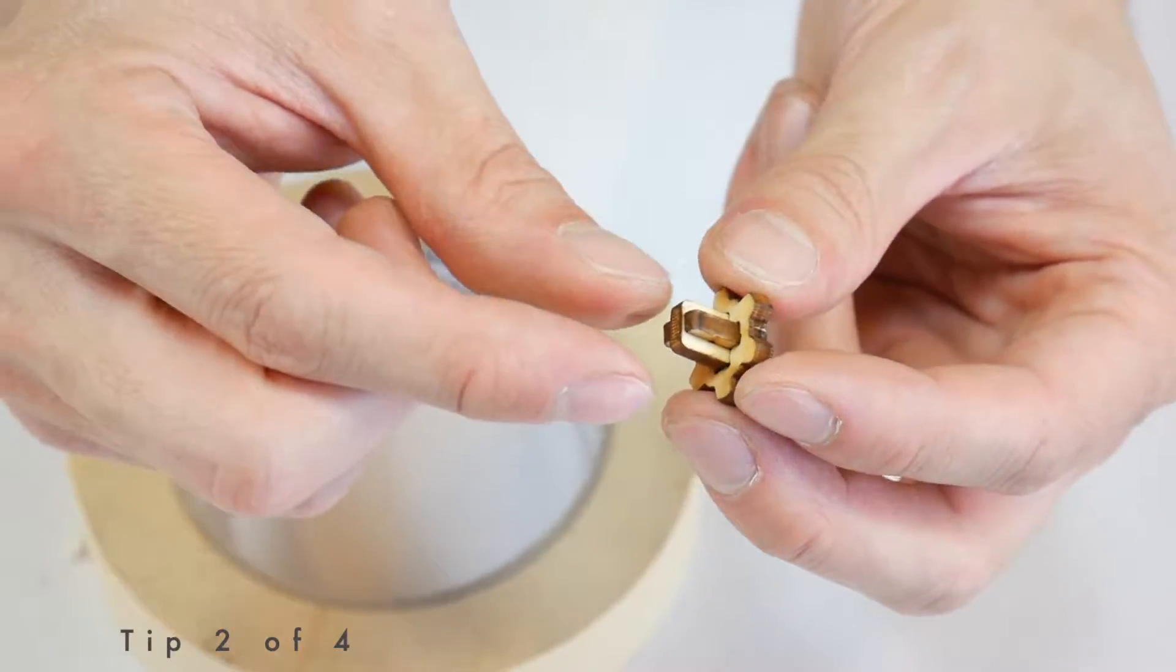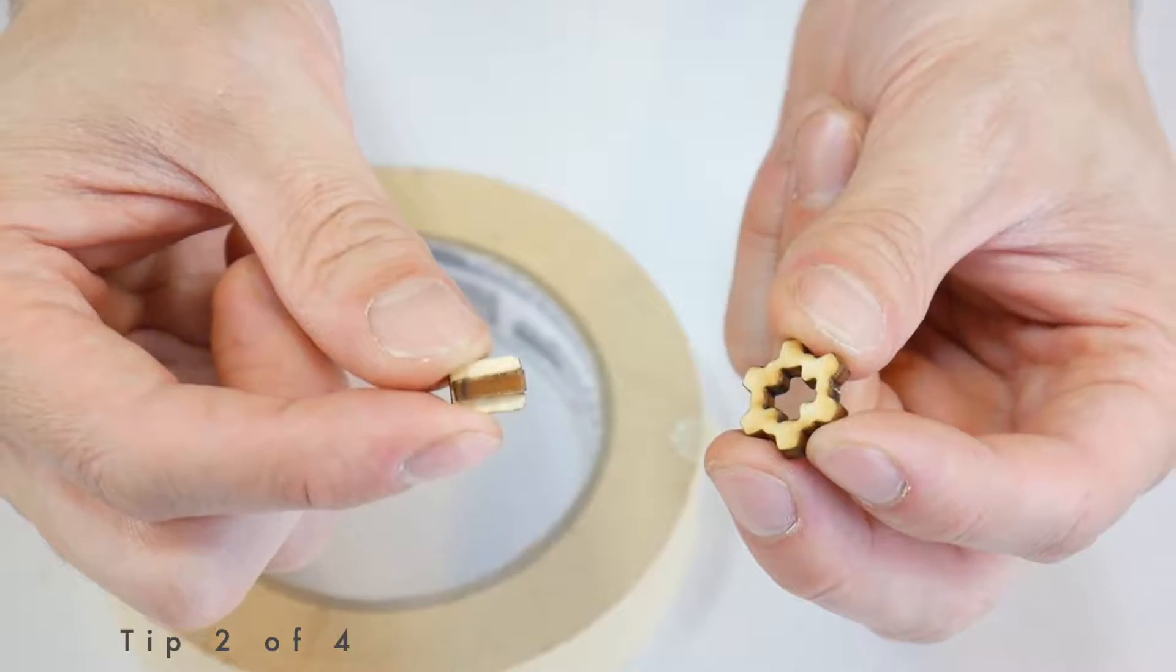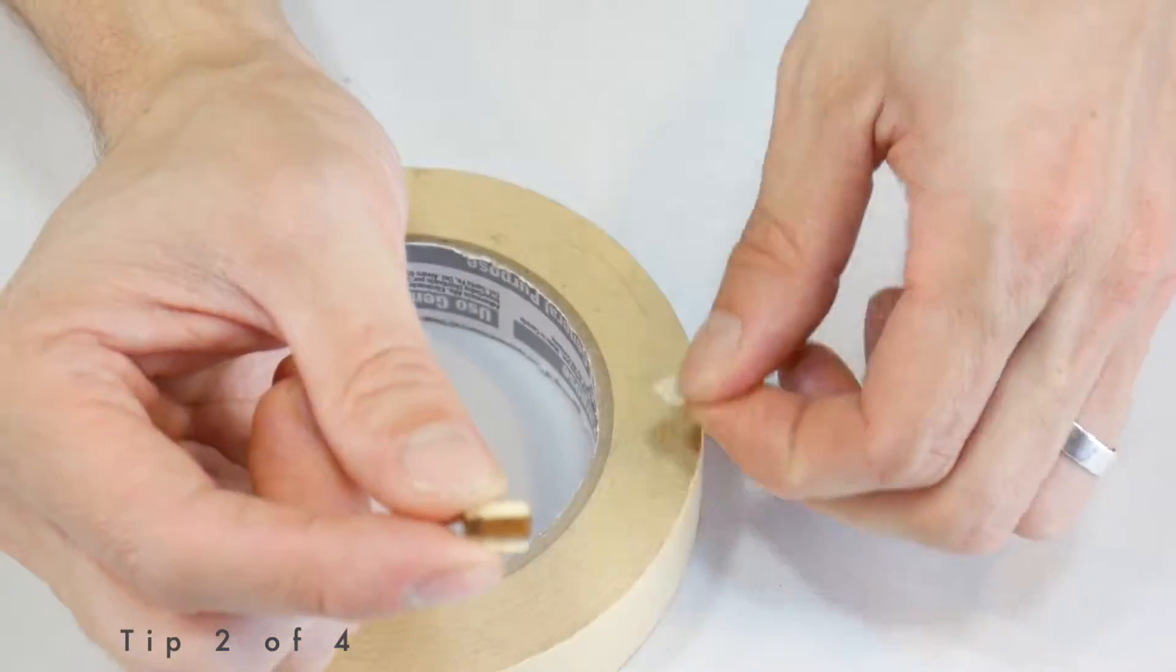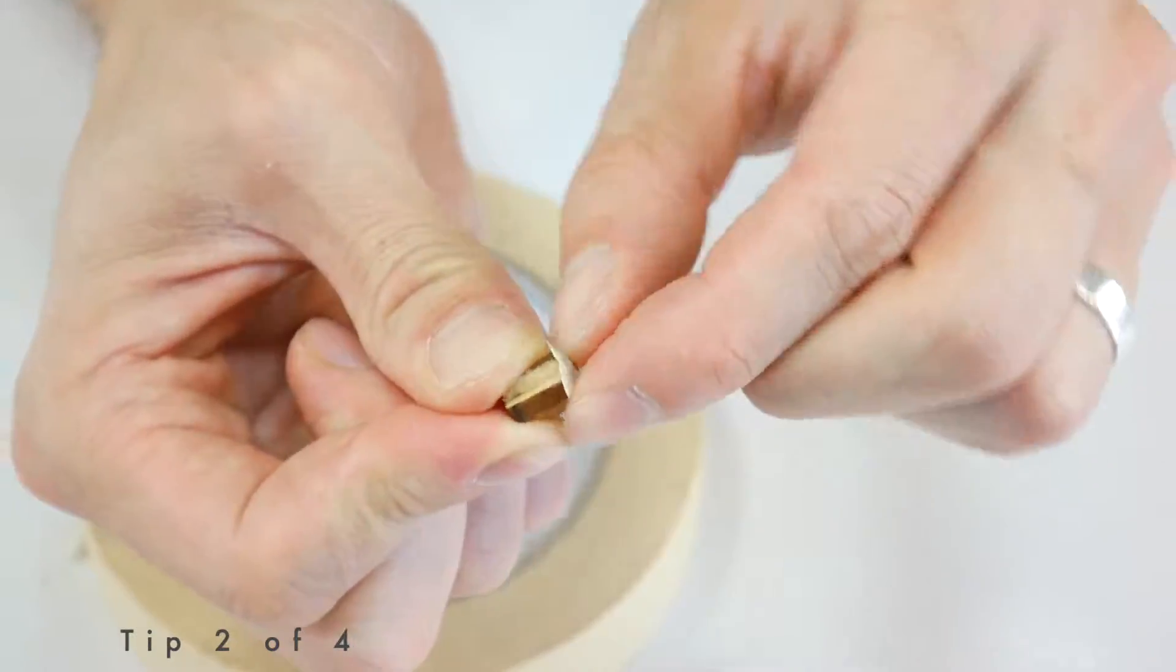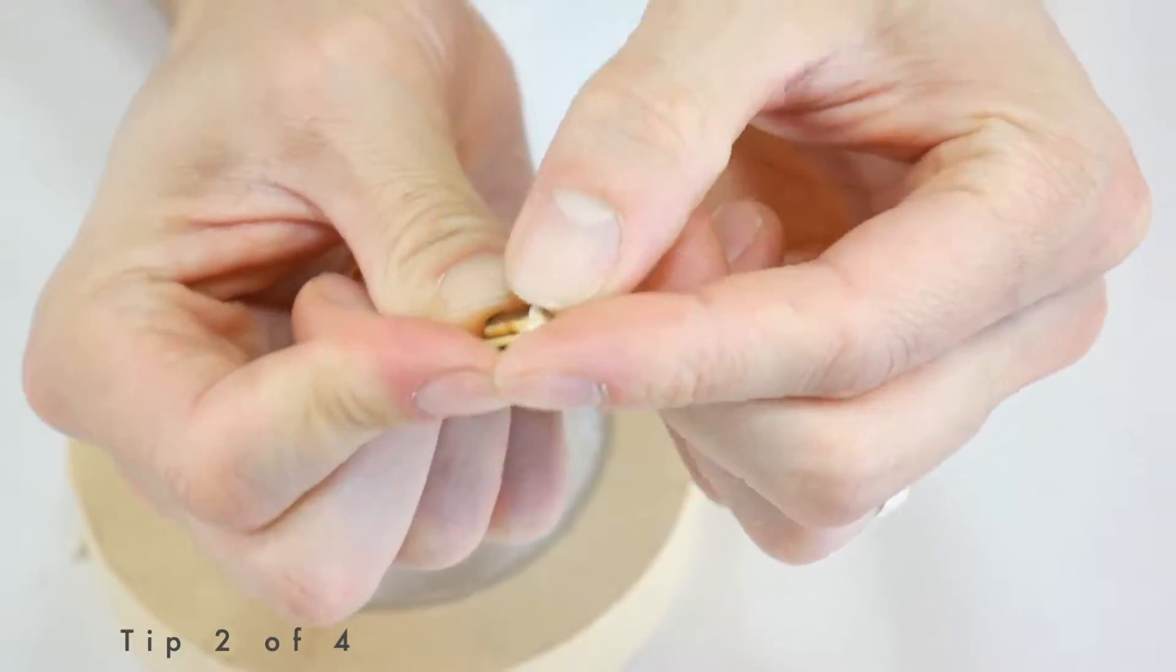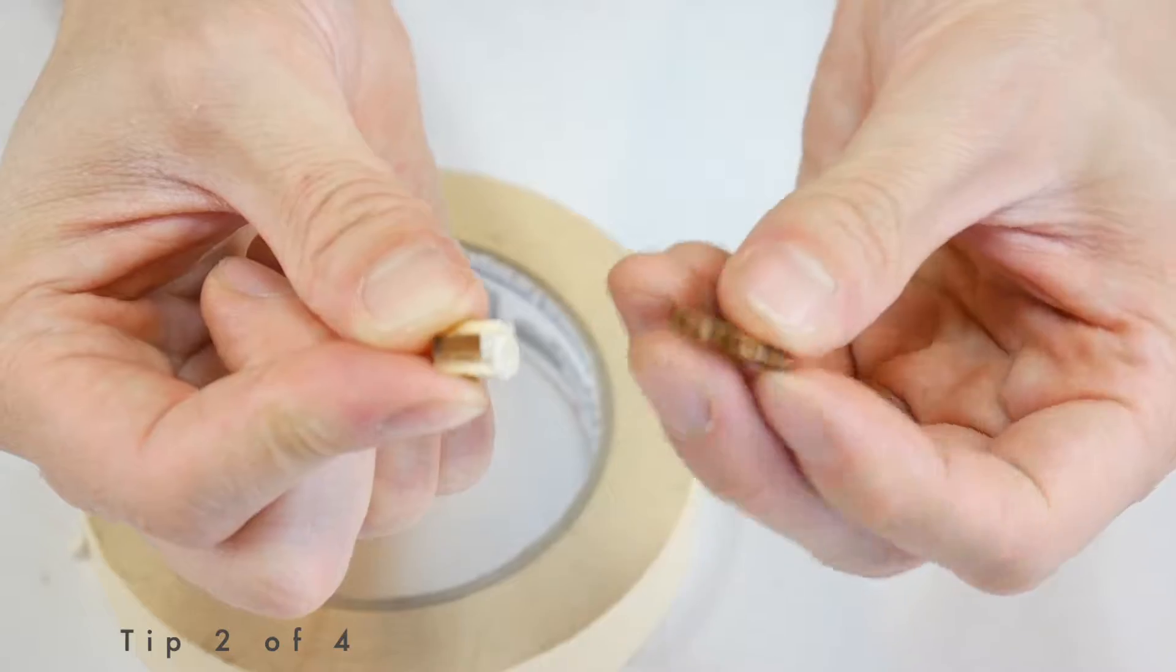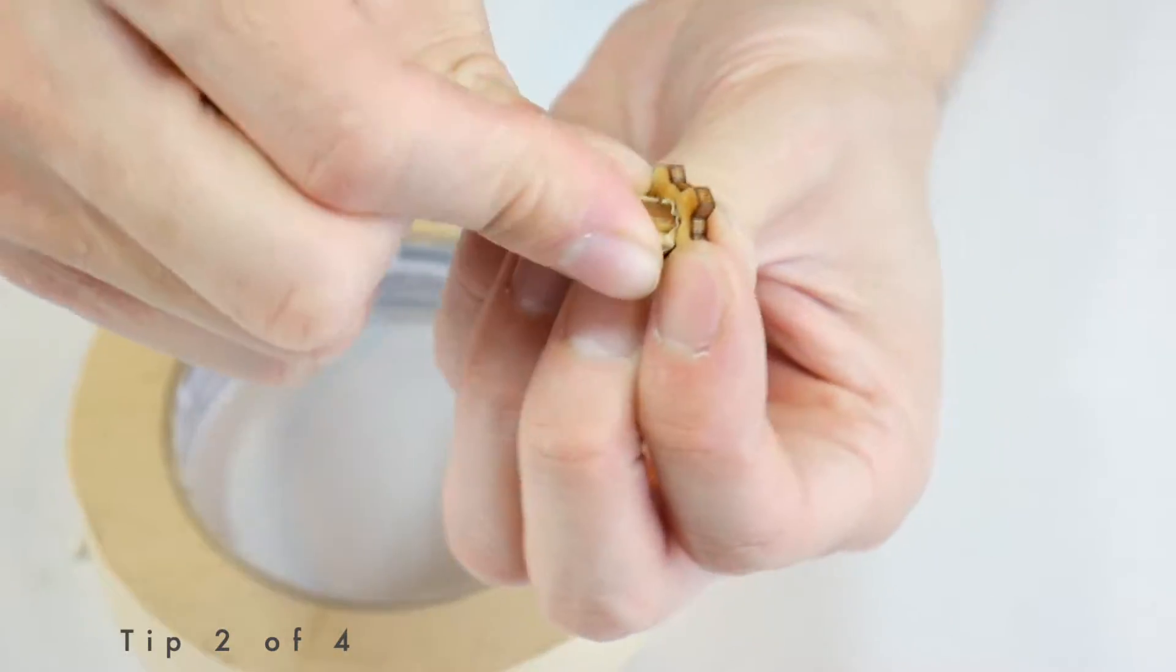Tip number two. If there are two pieces that are too loose and they're falling apart, you can get a very small piece of masking tape, pinch it around the outside of the connector, and then fit it back into where it needs to go.